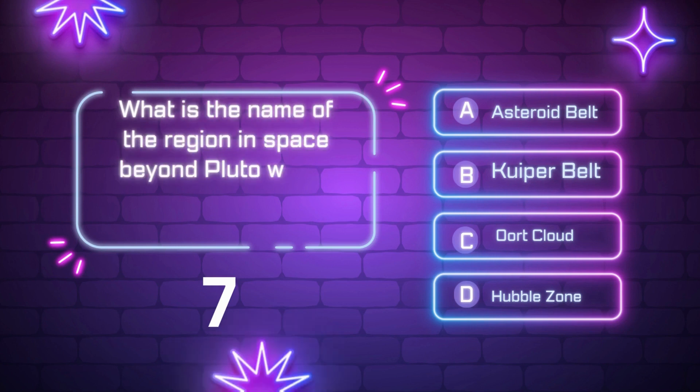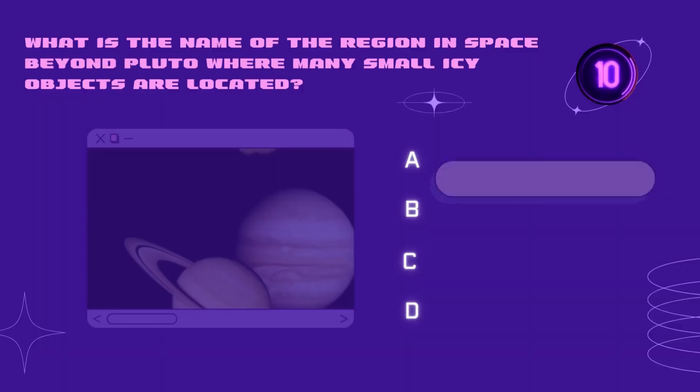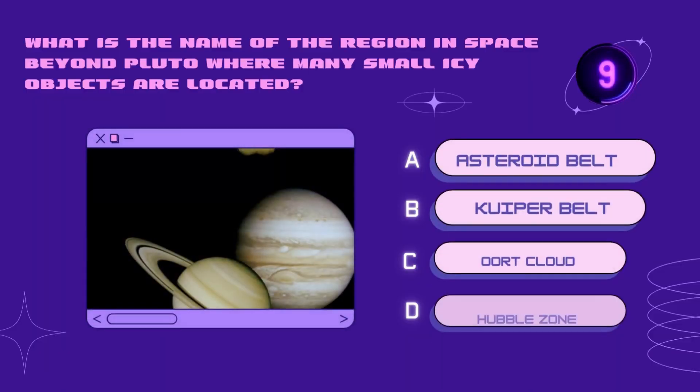What is the name of the region in space beyond Pluto where many small icy objects are located? Asteroid Belt, Kuiper Belt, Oort Cloud, Hubble zone. Your time starts now.